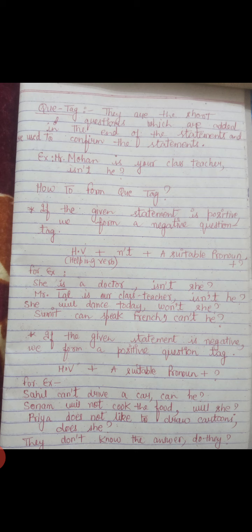The structure is: we have to use a helping verb, and we have to use 'not' in contracted form — n-apostrophe-t. For example: 'is not' becomes 'isn't', 'could not' becomes 'couldn't', 'was not' becomes 'wasn't'. Then we have to use a suitable pronoun in the sentence.